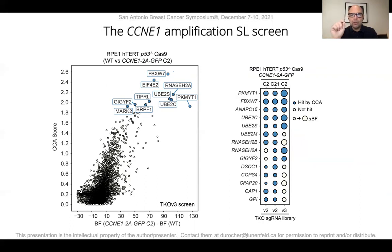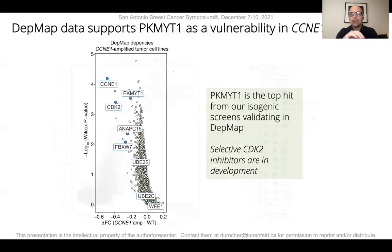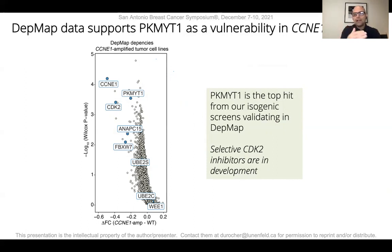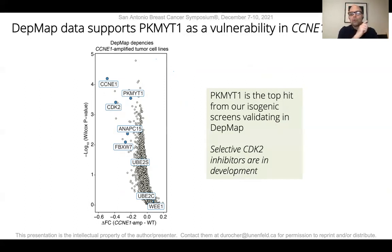To identify which genes we should work on, we decided to mine the DepMap data — a collection of genome-scale CRISPR screens in tumor-derived cell lines. We asked which genes are selectively essential in cell lines with high cyclin E1 levels. This exercise identified, in addition to our positive controls cyclin E and CDK2, a gene called PKMYT1. PKMYT1 was also a very strong hit in our isogenic screens.